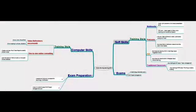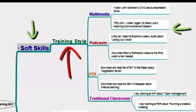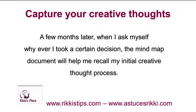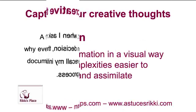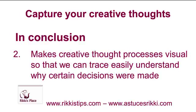Let's get back to my example, specifically the soft skills. The interconnections, relationships and dependencies between the key learning objective and the actual learning steps are clearly visible via the training style node. A few months later, perhaps when I ask myself why ever I took a certain decision, this document will help me recall my initial creative thought process. In conclusion, mind maps allow two things: to display information in a visual way that makes complexities easier to understand and assimilate, and to record dispersed thoughts. With mind maps we can creatively put thoughts in some sort of order without needing to worry about what to say. By making interconnections visible, we document thought processes and make it easier for us — and for others — to understand why certain decisions were made.